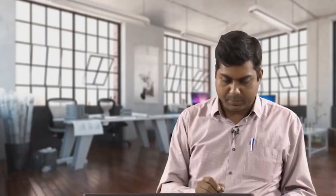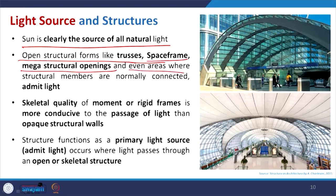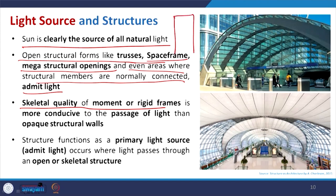The sun is clearly the source of natural light. Open structural forms like trusses, space frames, mega structural openings, and even the areas where structural members are normally connected can admit light if done appropriately. To get light inside you need openings — that is why the skeletal quality of a moment or rigid frame, where you make the structure with beam and column, is important. You can fill the rest with masonry work, which reduces the opening percentage, or go for structural glazing with glass, which allows more light to pass through.